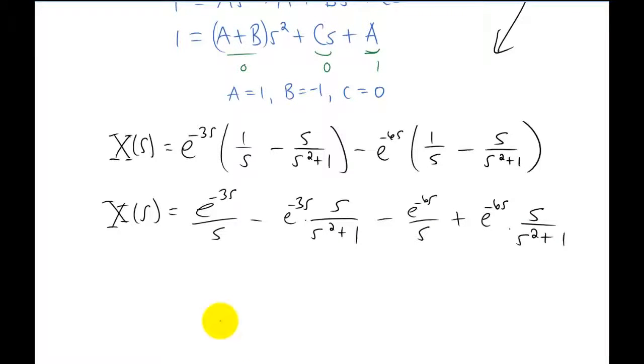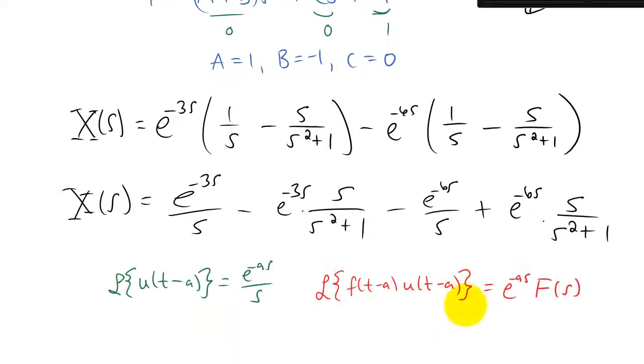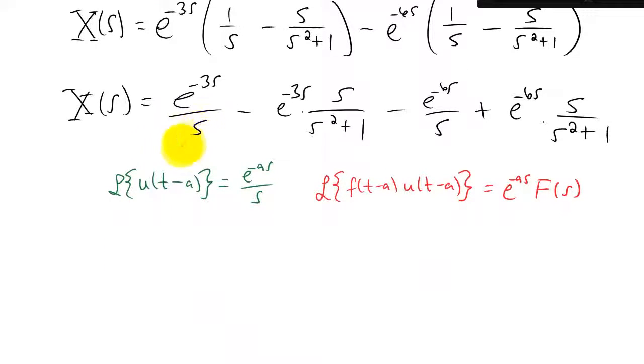Don't forget the Laplace transform properties that we're going to be using to do this. For the first term and the third term we're actually going to be using the very simple property directly from the Laplace transform table. And for the second term and the fourth term we're going to be using the red property here from this table.